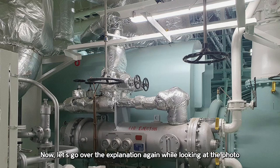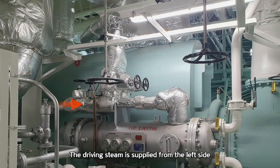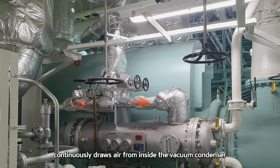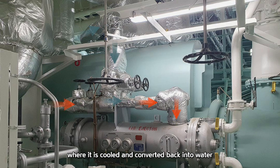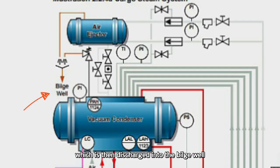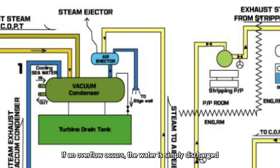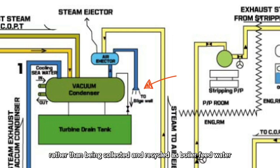Now let's go over the explanation again while looking at the photo. The driving steam is supplied from the left side and exits through the right discharge side. At the same time, the ejector suction section continuously draws air from inside the vacuum condenser. After completing its function, the steam passes through the ejector condenser, where it is cooled and converted back into water, which is then discharged into the bilge well. Since the amount of steam consumed by the steam ejector is not very large, if an overflow occurs, the water is simply discharged rather than being collected and recycled as boiler feed water.